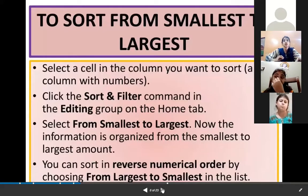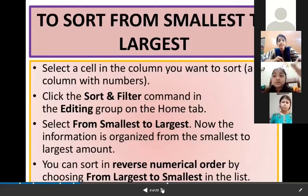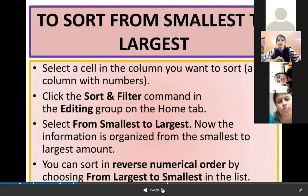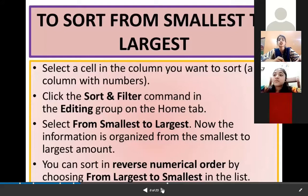To sort from smallest to largest, select a cell in the column you want to sort—a column with numbers. Click the Sort & Filter command in the Editing group on the Home tab. Select from smallest to largest. Now the information is organized from the smallest to the largest number.